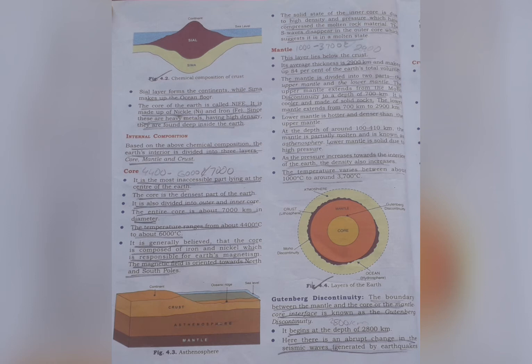Internal Composition. Based on the above chemical composition, the Earth's interior is divided into three layers: core, mantle, and crust. The core is the most inaccessible part, lying at the center of the Earth, and is the densest part of the Earth.